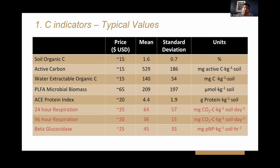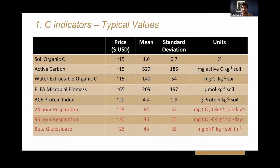Looking at all eight indicators, I'm showing typical values and variability. The units on the right highlight that the top indicators represent a pool of carbon per kilogram of soil, whereas the more biological ones are rates — some amount of carbon per kilogram soil per time, either per day or per hour. Also shown is the price of these indicators if sent to a commercial or university lab. The PLFA analysis is much more expensive, while the other indicators range from about $15 to $25.